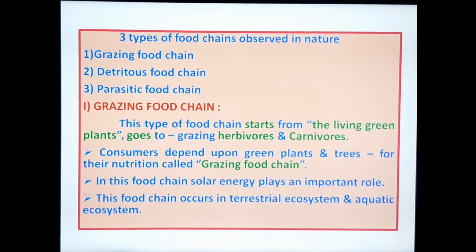First, the grazing food chain. This type of food chain starts from living green plants, then goes to grazing herbivores and carnivores. Consumers that depend upon green plants and trees for their nutrition form the grazing food chain. Solar energy plays an important role in this grazing food chain.